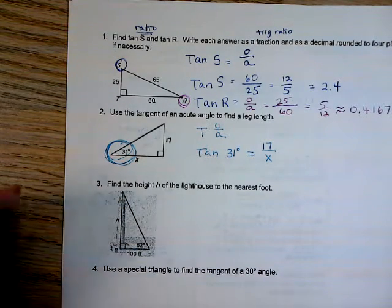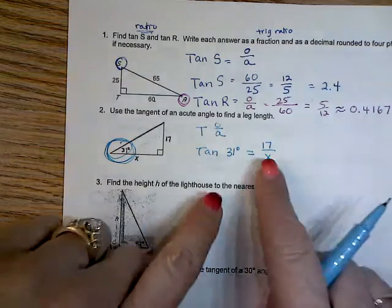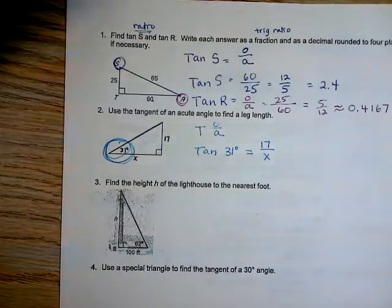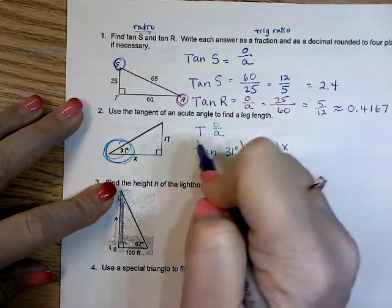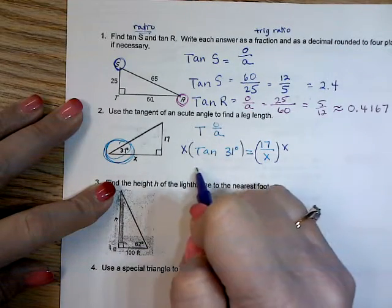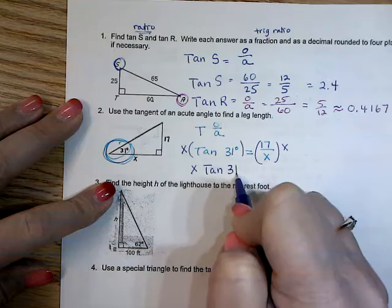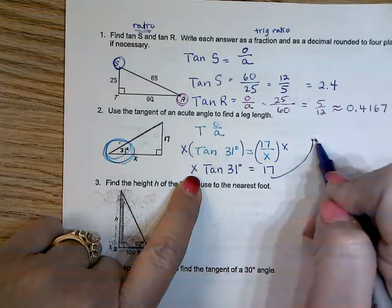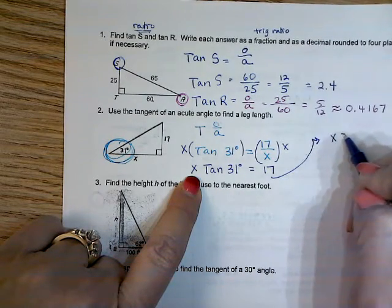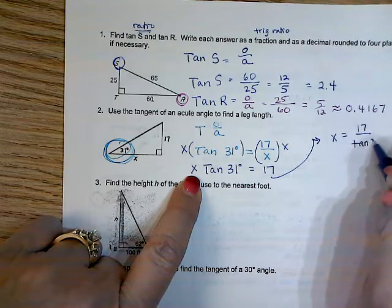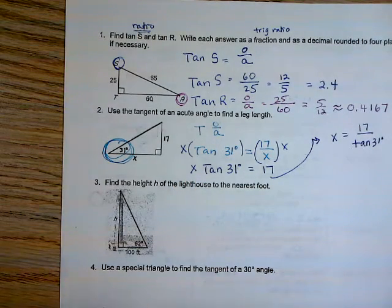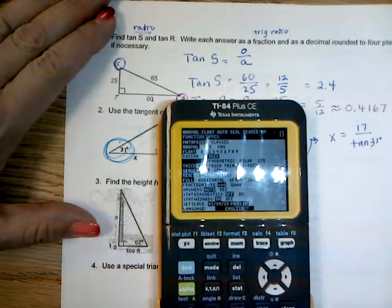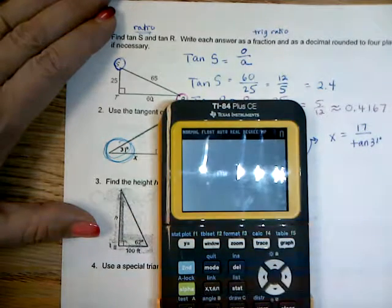All this is done on the calculator. I can't keep X in the denominator, so I'm going to multiply both sides by X. X times the tangent of 31 is going to equal 17. We're solving an equation, so X has to be by itself — I have to divide both sides by the tangent of 31. I take my calculator, and I already made sure it's in degrees.